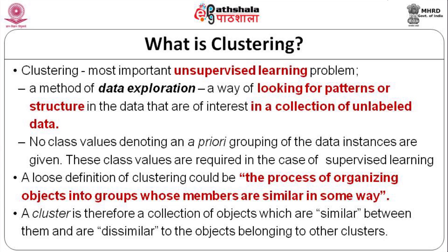No class values denoting a priori grouping of the data instances are given. That is the difference between unsupervised and supervised learning: in supervised learning, data instances along with class labels are given, but in unsupervised learning, a priori grouping is not done — the data instances are just given and then we try to find a pattern or structure. A loose definition of clustering is the process of organizing objects or data points into groups whose members are similar in some way.